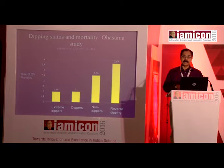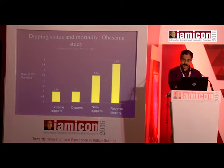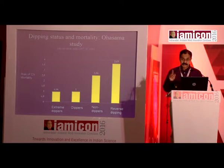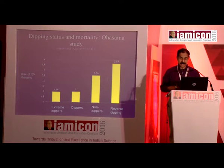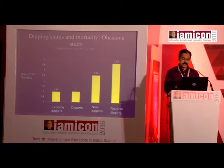The dipping status is very important. Normally, BP falls 10–20% during sleep — these are 'dippers.' Non-dippers, who have less than 10% nocturnal fall, have approximately 2.5-fold higher cardiovascular mortality. Reverse dippers — whose nocturnal BP actually increases — are seen especially in chronic kidney disease and have 3–4 fold higher cardiovascular mortality, linked to stroke, MI, and sudden cardiac death.